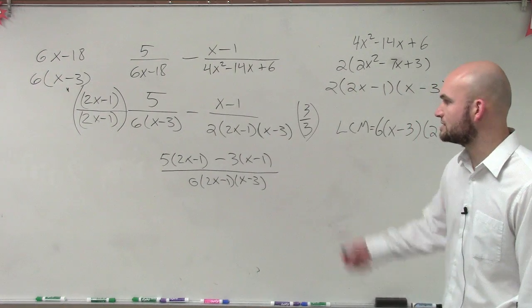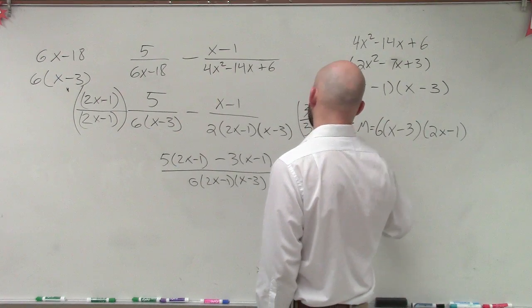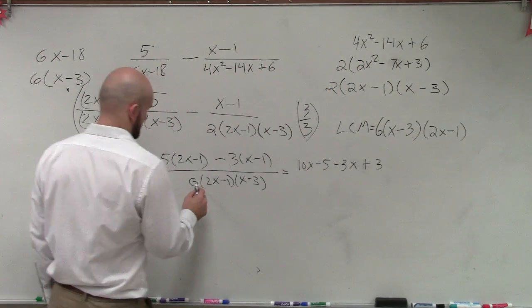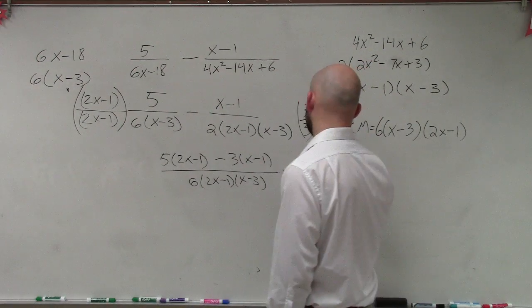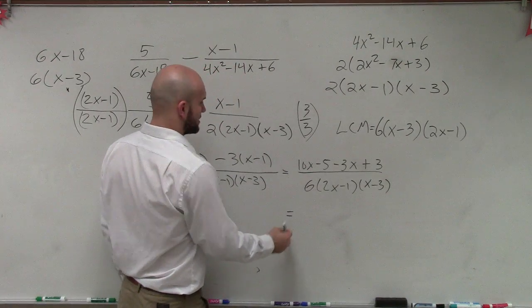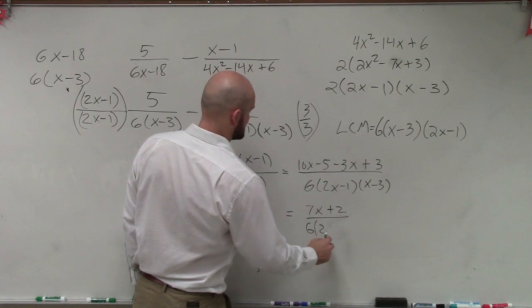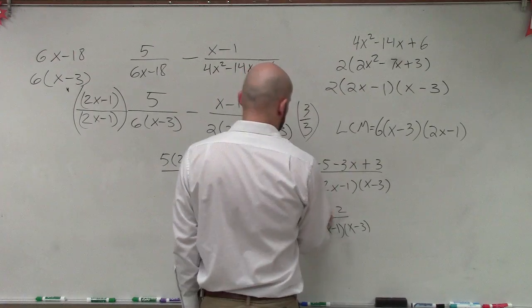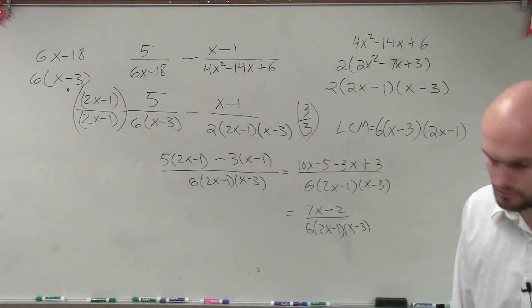So now let's go ahead and simplify this. Then simplify the numerator again and you get 7x plus 2 over 6 times 2x minus 1 times x minus 3. Actually, 7x minus 2.